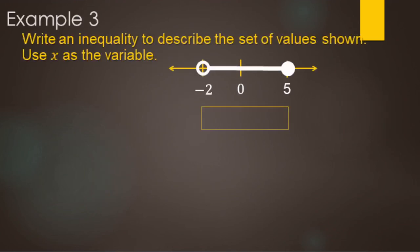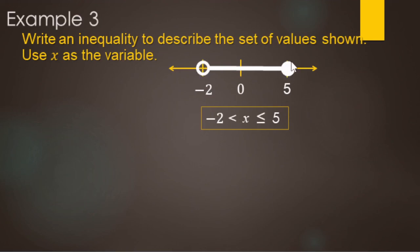Here we're going to write an inequality to describe a set of values shown on a graph — we're going backwards: starting with the graph and writing the inequality. The smallest number is negative 2 and the biggest is 5, with x's in between. For negative 2, it's strictly less than because negative 2 is not a solution — open circle. For 5, it's or-equal-to — closed circle. A common mistake is mixing up the direction of the inequalities, having both pointing in or both pointing out. The correct form has the smallest on the left, less than, less than, the biggest — both should be less thans, going from smallest to biggest.